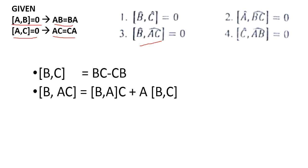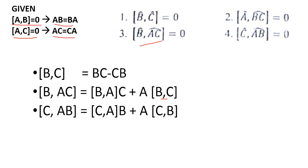Now the third option: the commutator of B and AC. According to our relation, this equals the commutator of B and A times C, plus A times the commutator of B and C.